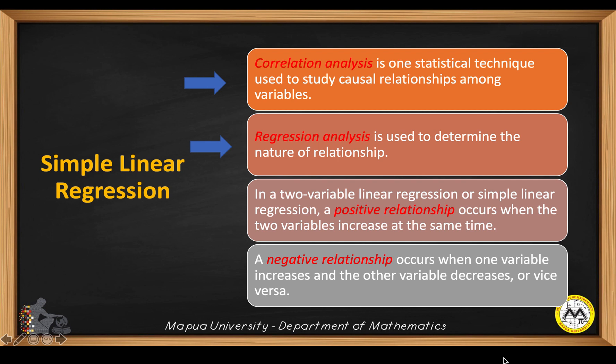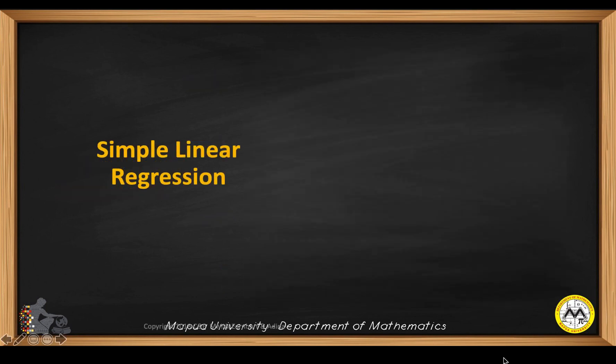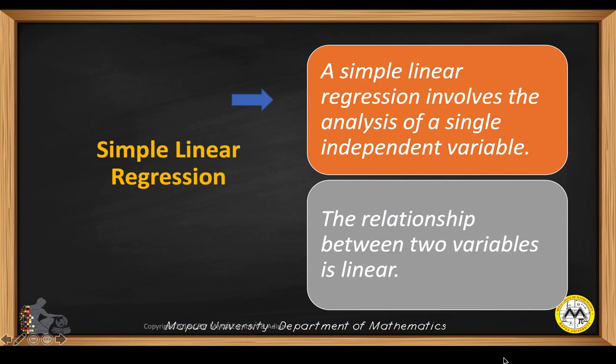Regression analysis is used to determine the nature of a relationship. In a two-variable linear regression or simple linear regression, a positive relationship occurs when two variables increase at the same time, while a negative relationship occurs when one variable increases and the other decreases, or vice versa. A simple linear regression involves the analysis of a single independent variable, and the relationship between these two variables is linear.